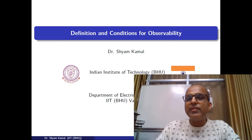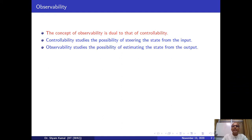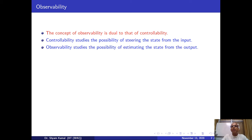In this course I am going to limit myself to continuous linear systems. In this lecture I am going to prove that the concept of observability is dual to controllability. Controllability studies the possibility of steering the state from the input, and observability — what we are going to learn today — studies the possibility of estimating the state from the output. With fewer sensors and a virtual/computer program, it is possible to estimate all other state variables.